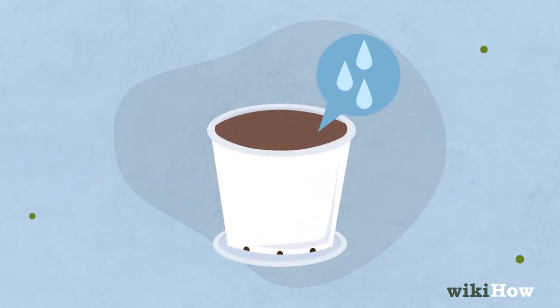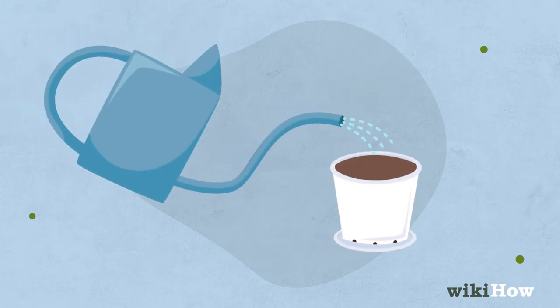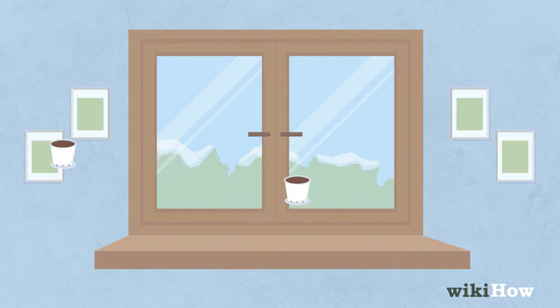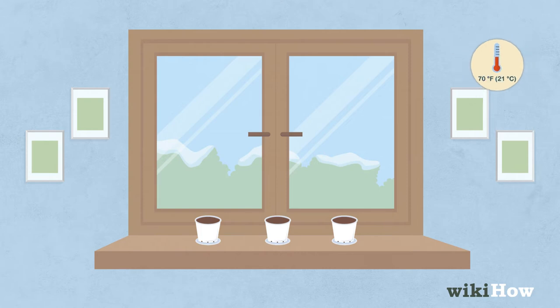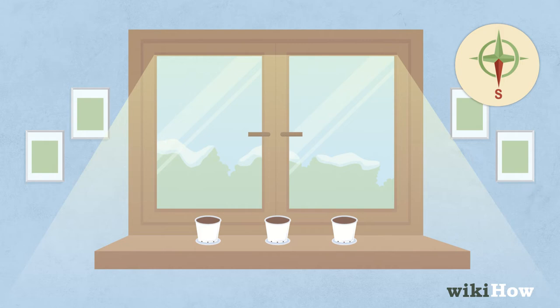Keep the soil damp but not sopping wet, and water the seeds any time the soil starts to dry out. Store the seed containers in a room where the temperature stays around 70 degrees Fahrenheit, 21 degrees Celsius. If possible, place them in a south-facing window so they get plenty of sun during the day.